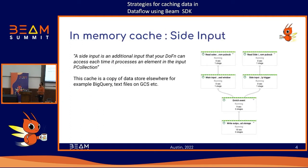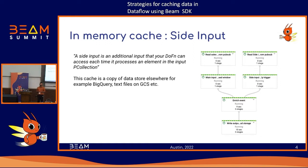In the Beam SDK, a side input is essentially an additional input that you can pass to your DoFn. Each element of your main PCollection has access to the entire side input. This side input can be a copy of data from an external storage like BigQuery or files from GCS. So instead of making calls to Bigtable, BigQuery, or GCS, you can do a local lookup in Dataflow by using side inputs.